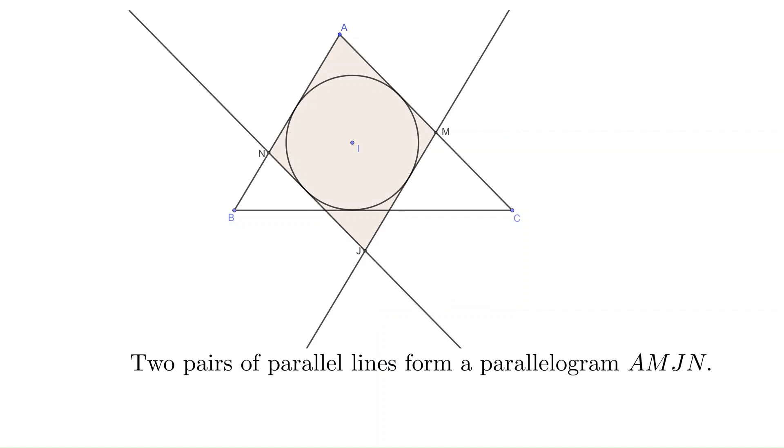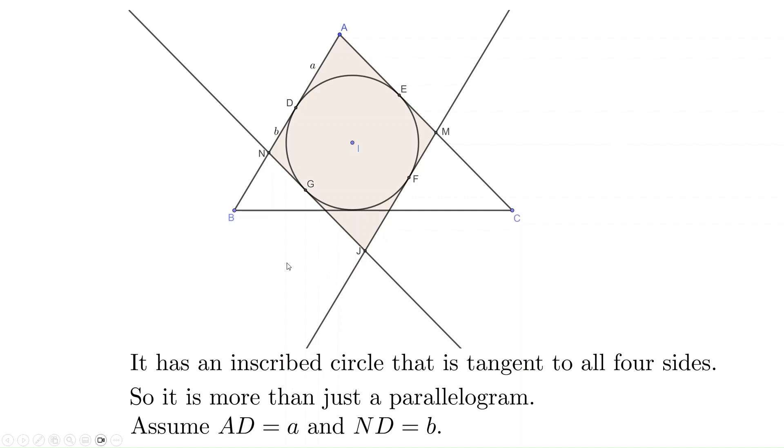The starting point is the parallelogram formed by two pairs of parallel lines, A, M, J, N. It has an inscribed circle tangent to all four sides. So it is more than just a parallelogram. We denote the four tangent points of the circle as D, E, F, and G respectively.